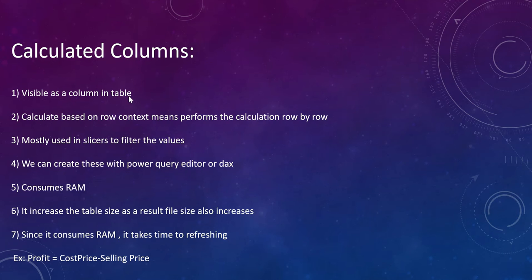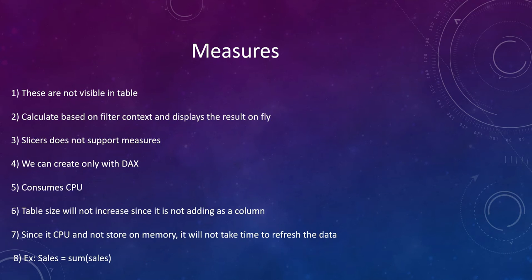Whenever you add a calculated column to a table, it is automatically added as a column and you can see that value in the table. Measures, on the other hand, are not visible as a column in the table. When you click on the View tab, you cannot see the measure — you can only see it when you drag and drop it into a visualization.